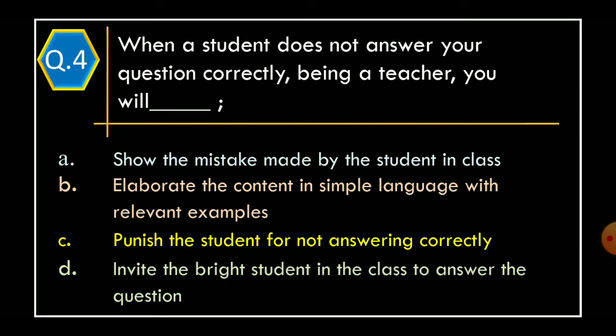Question 4: When a student does not answer your question correctly, being a teacher, you will — Option A, show the mistake made by the student in class; Option B, elaborate the content in a simple language with relevant examples; Option C, punish the student for not answering correctly; Option D, invite the bright student in the class to answer the question.